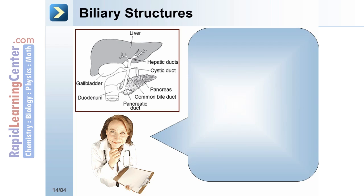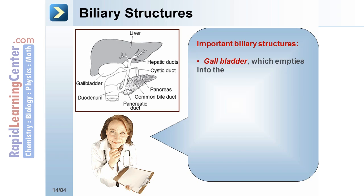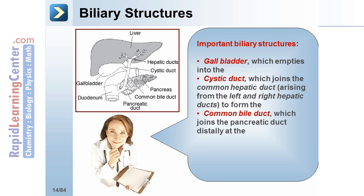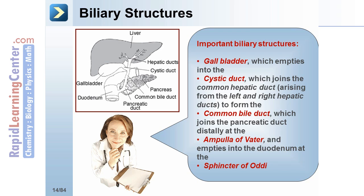Important biliary structures are the gallbladder, which empties into the cystic duct, which joins the common hepatic duct, arising from the left and right hepatic ducts, to form the common bile duct. The common bile duct joins the pancreatic duct distally at the ampulla of Vater and empties into the duodenum at the sphincter of Oddi.